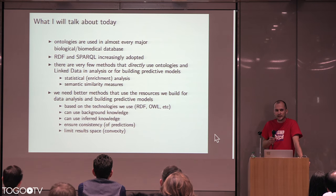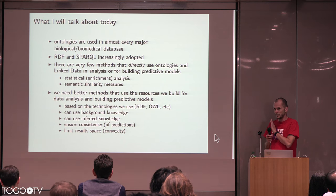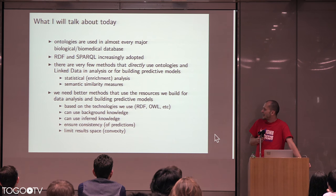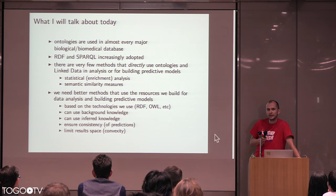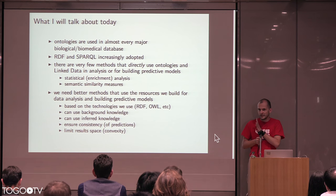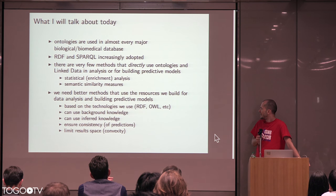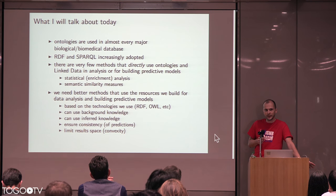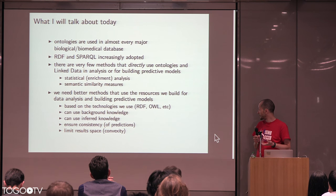The methods we have are very limited. We essentially have two methods that somehow utilize these resources: enrichment analysis and semantic similarity. We have seen a lot of applications and they are not bad methods, but it is a bit limited. I start with the hypothesis that we need better methods if we want to make our resources useful to biologists and lead to discovery. I will mainly talk about predictive models, but these can also be used for statistical analysis. And they should be based on semantic web technologies.